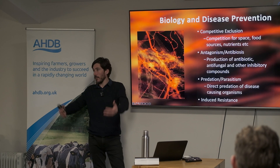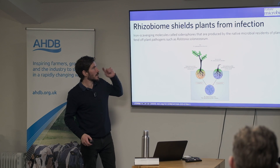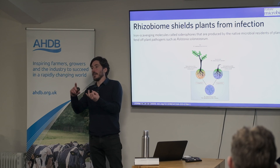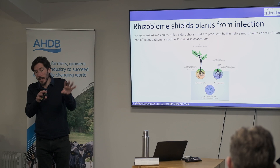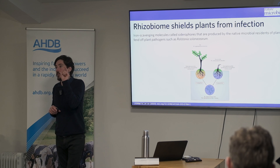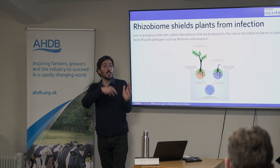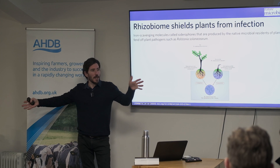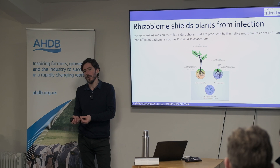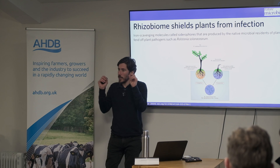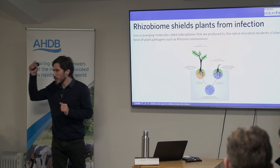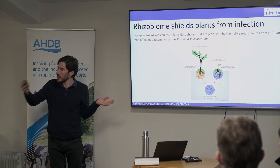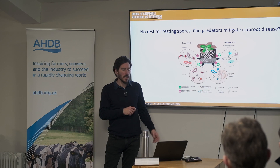Fourth, induced resistance — beneficial microbes can work with the plant to help trigger an immune response, helping the plant turn on its immune system to fight off pests and disease. One study shows that plants and beneficial microbes release siderophores — compounds with a high affinity for iron — used to solubilize iron from soil. Plants, beneficial microbes, and pathogens all need iron. Through competition for iron, beneficial microbes induce an iron deficiency in the pathogen, limiting its ability to cause disease.